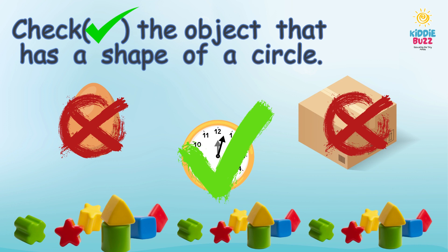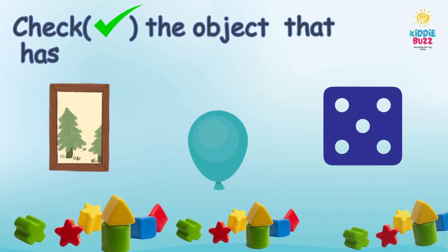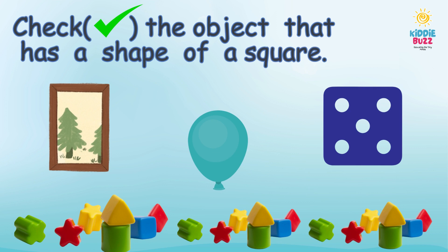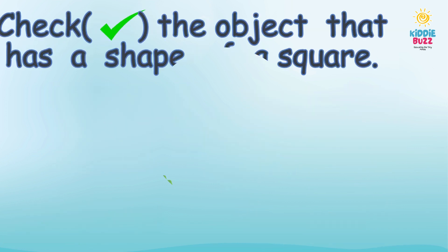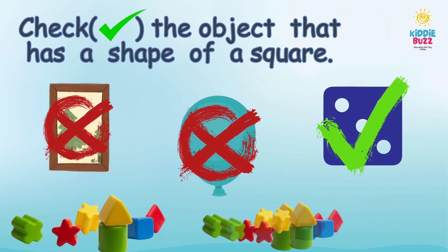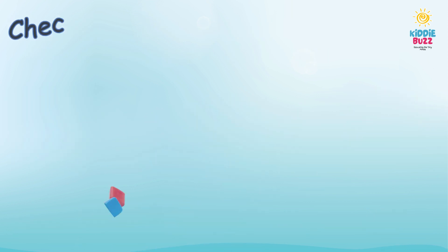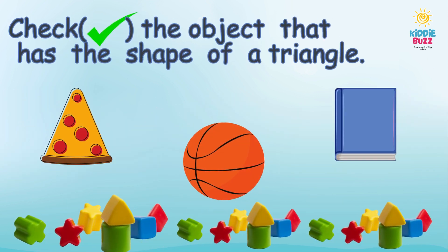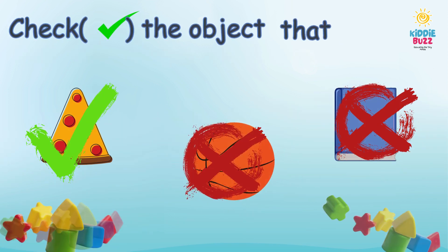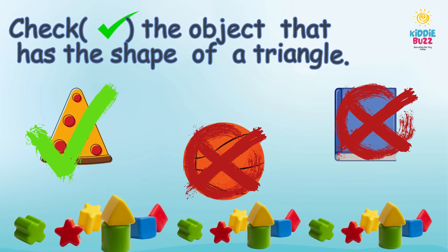It's a clock. Now check the object that has a shape of a square. It's a piece of pizza.